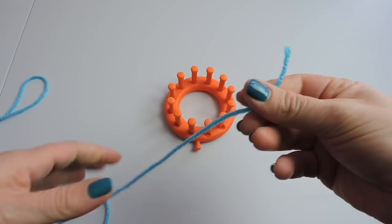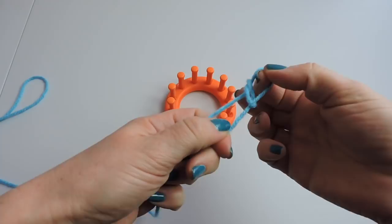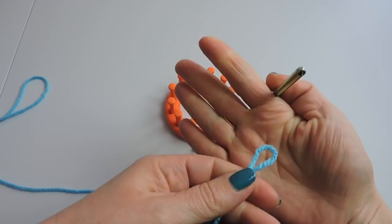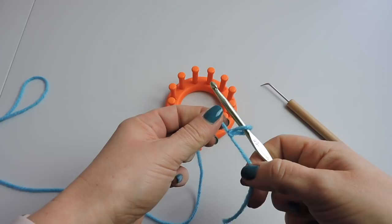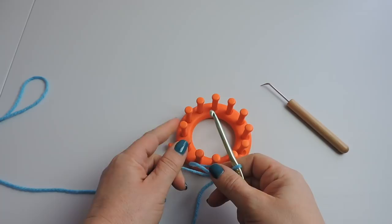So we're going to start by making a slipknot and we're not going to place it on the loom, we're going to place it on the crochet hook instead. Don't tighten it all the way but tighten it enough to secure it.